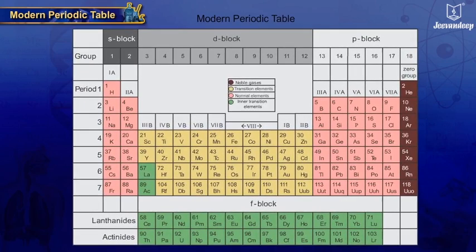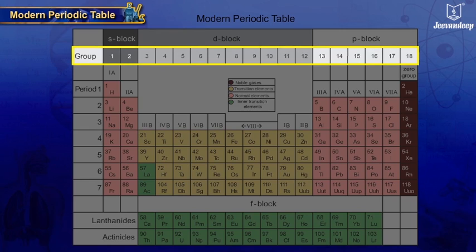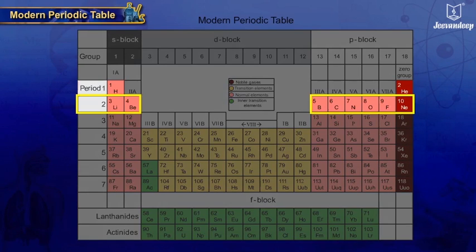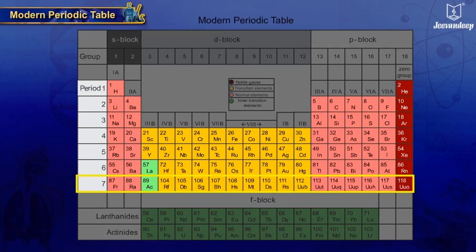The Modern Periodic Table has 7 horizontal rows known as periods and 18 vertical columns known as groups. Periods are numbered from 1 to 7.